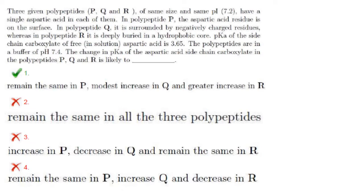In the first case, the pKa value of aspartic acid will not change as it is on the surface. In the hydrophobic interior of protein molecules, the pKa values may shift to 7 or even higher. The same effect occurs if a negative charge is placed nearby, allowing them to function as proton donors at physiological pH. So the answer is: remains the same in P, modest increase in Q, and greater increase in R.